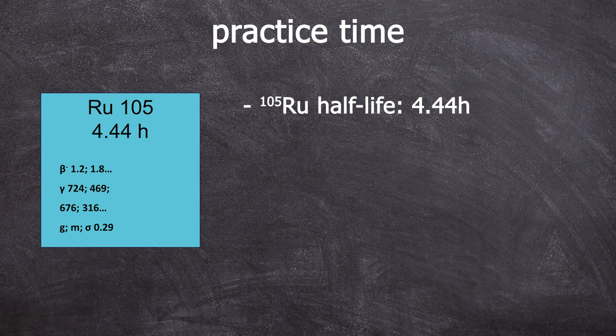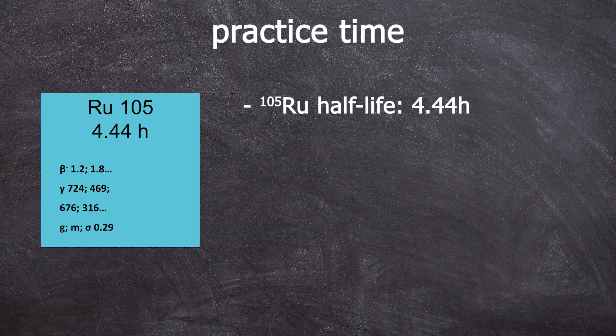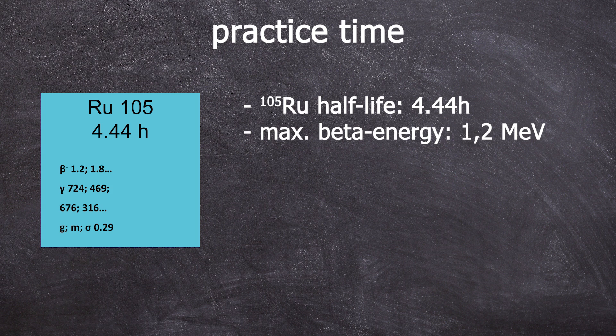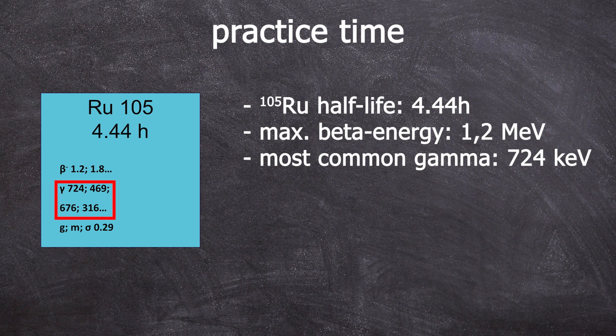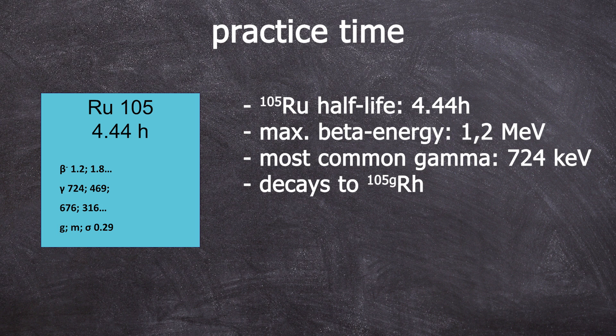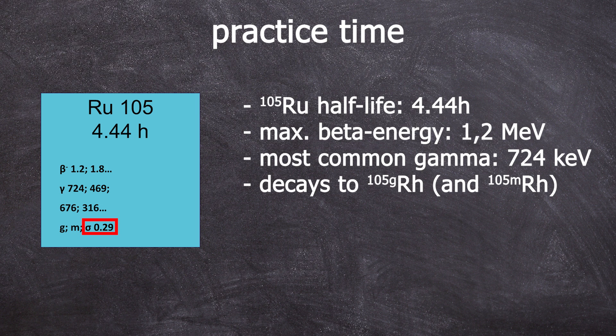The next is ruthenium-105 which decays with a half-life of 4.44 hours and 100% via beta minus decay. The maximum energy of the beta particles is 1.2 mega electron volts or with a lower probability 1.8 mega electron volts. Upon decay, gammas are emitted sorted by decreasing probability with the energies of 724, 469, 676 and 316 kiloelectron volts. Other energies are also possible but have a probability of less than 1%. Ruthenium-105 primarily decays into rhodium-105g but with a probability of over 5% it decays into rhodium-105m. The cross-section for an N-gamma reaction with thermal neutrons is 0.29 barns which is quite small.